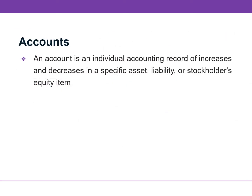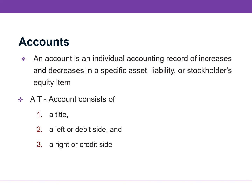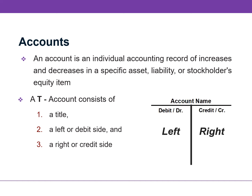An account is an individual accounting record of increases and decreases in a specific asset, liability, or stockholder's equity item. In its simplest form, an account consists of three parts: a title, a left or debit side, and a right or credit side. Because the format of an account resembles the letter T, we often refer to it as a T account.